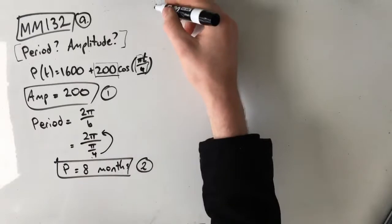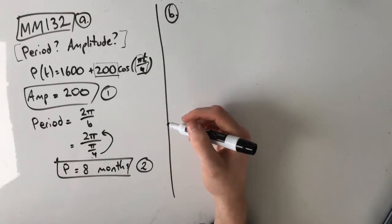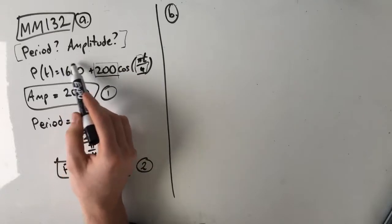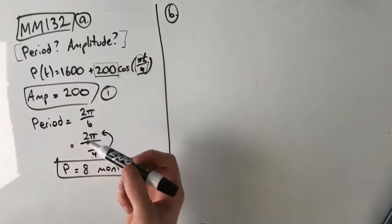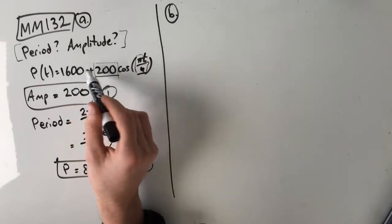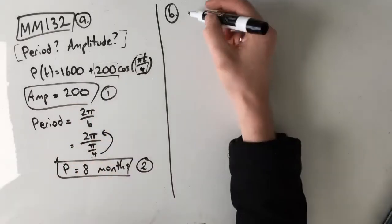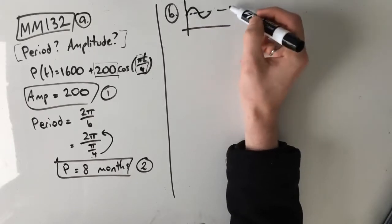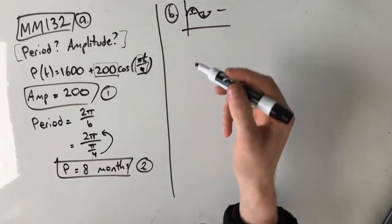So part b, find the maximum and minimum populations of possums in this area. Remember that this number here, this c value outside the front, it's normally on the end but the front is fine as well. This is our midpoint. So our amplitude is added to our midpoint to find our maximum and our amplitude is subtracted from our midpoint to find our minimum. If we have a graph that looks like this, our maximum is adding our amplitude and our minimum is subtracting our amplitude.